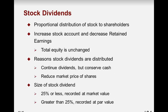If we have a stock dividend, these are proportional distributions of stock to shareholders. It increases the stock account and decreases the retained earnings, but total stockholders' equity remains unchanged — it just changes the paid-in section versus the retained earnings section. We do stock dividends to continue dividends without spending cash, and it helps reduce the market price of shares. If the stock dividend is 25% or less of total stock, we record it at market value; if greater than 25%, we record it at par value, as governed by GAAP.